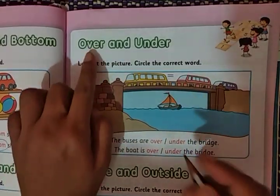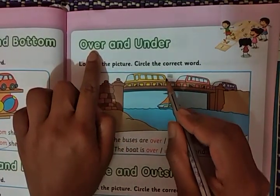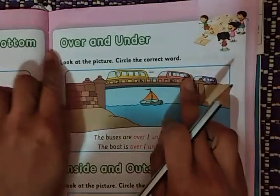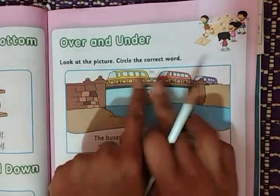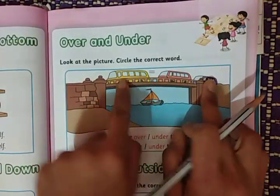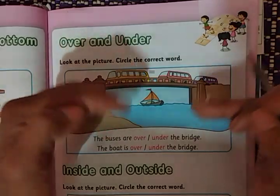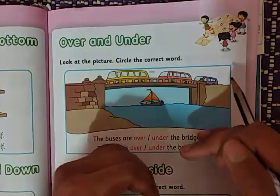See, over means above. So, over — what are they? They are vehicles, right? Buses. So, buses are above. That is over. Over what? Over the bridge.